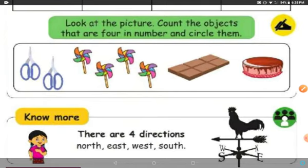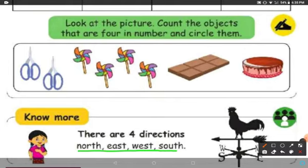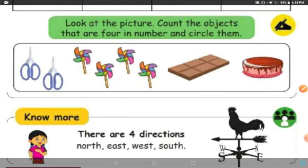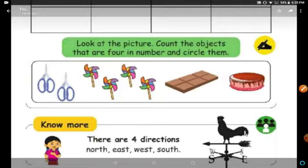See how many directions there are. There are 4 directions: North, East, West, and South. There are 4 directions — North, East, West, and South. So this is about number 4.